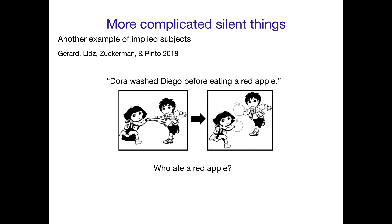A study by Girard and Company in 2018 was looking at another example of how young children interpret silent or implied subjects. In this case we have: 'Dora washed Diego before eating a red apple.' This is a non-finite embedded clause — there's no tense associated with it. It's not 'will' or 'did'; it's just 'eating.'